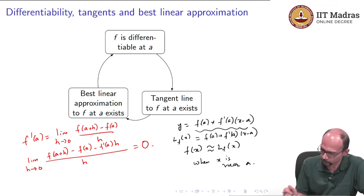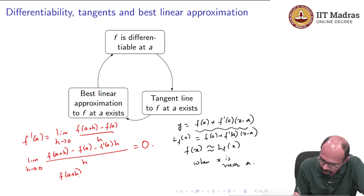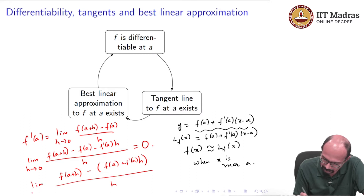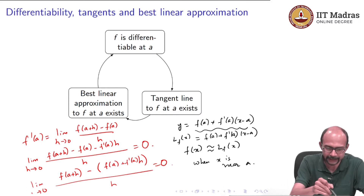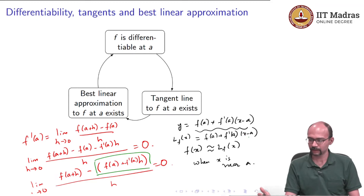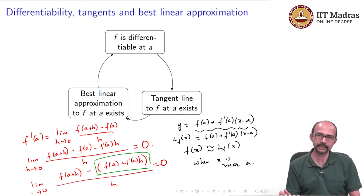The point I want to make is: notice the expression in the numerator. If I rewrite it, it is [f(a+h) − (f(a) + f'(a)·h)] / h, and this limit is 0. The expression in brackets — f(a) + f'(a)·h — is exactly the best linear approximation of the function close to the point a. If you put x = a+h, then h = x−a, and you get exactly the tangent line formula. So f(a) + f'(a)·h is the best linear approximation of the function close to the point a.